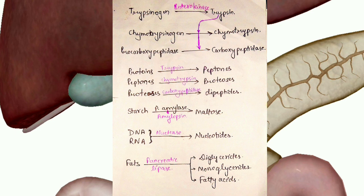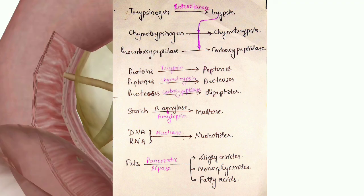Pancreatic juice has pancreatic amylase, known as amylopsin, which breaks starch to maltose; nucleases to break down nucleic acids like DNA and RNA into nucleotides; and pancreatic lipase, which emulsifies triglycerides, i.e., fats, into diglycerides, monoglycerides, and fatty acids.